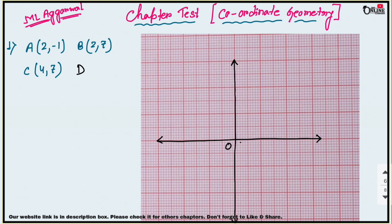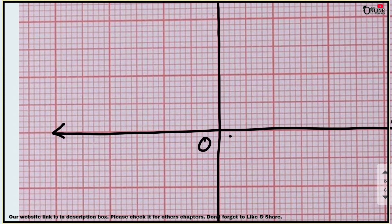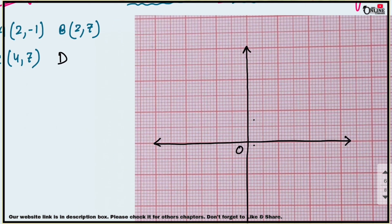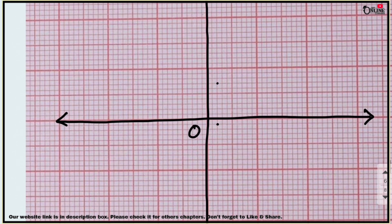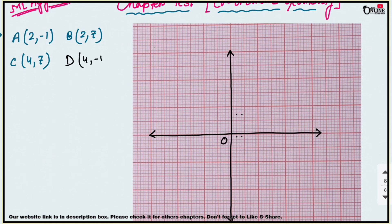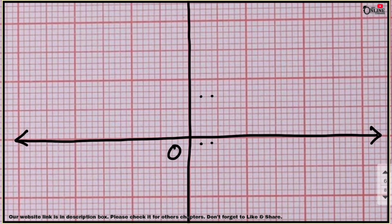Next point B is (2, 7), and after that C is (4, 7) — so 1, 2, 3, 4 and then 7. Now you can easily find the fourth point D. Since ABCD is a rectangle, the next point D will be (4, -1). Join these four vertices and you will get the rectangle.